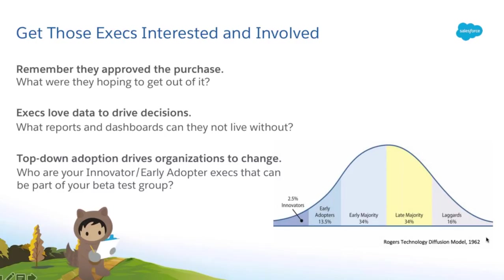Top-down adoption drives organizations to change. I remember hearing at Dreamforce that Michael Dell was the number one user of Salesforce at Dell Computers — that top-down adoption helps the rest of the organization rally around it. On your screen you'll see the Rogers Technology Diffusion Model — a typical bell curve. On the left are your innovators and early adopters: the people who sleep outside when a new iPhone comes out, first to try virtual reality goggles. Those are the executives you want to start with for your internal executive influencer campaign.